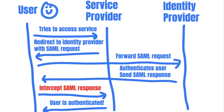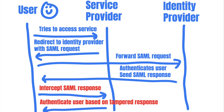An attacker can locate the SAML response by intercepting the request going between their browser and the service provider. After tampering with the SAML response using one of these three methods, they can re-encode the message into its original form and send it back to the service provider. The service provider will use that information to authenticate the attacker, and in this case, the attacker can obtain a valid session with another user's account.